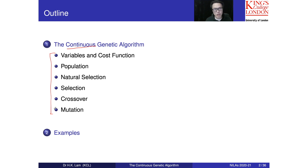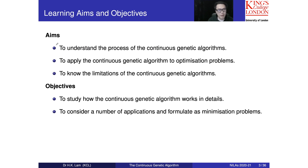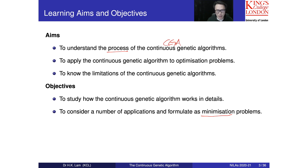If you look into the literature you will find a lot of advanced continuous genetic algorithms. We also look at some examples, including doing the genetic algorithm by hand. The aim is to understand the process of the CGA — the continuous genetic algorithm — and to develop problem-solving skills for formulating a problem as a genetic algorithm. We are going to do minimization; if you need to do maximization, multiply the cost function by minus one to convert it.